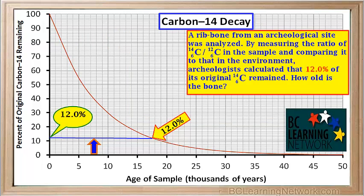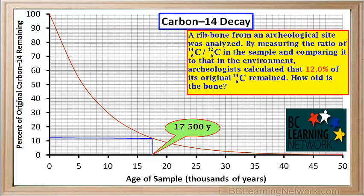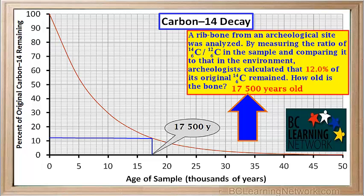By measuring the ratio of carbon-14 to carbon-12 in the sample and comparing it to that in the environment, archaeologists calculated that 12% of its original carbon-14 remained. We draw a line from the 12 on the percent axis over to the curve, then from that point we draw a straight line down to the x-axis or the age axis. We see that it hits the x-axis at a point corresponding to approximately 17,500 years old.